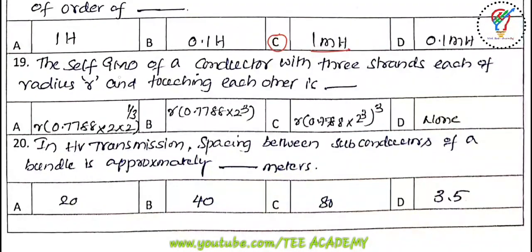Nineteenth question: the self-GMD (also called GMR) of a conductor with three strands each of radius r touching each other — the GMR value is r × 0.778 × 2 × 2, to the power of 1/3. This is the right answer, and these types of questions are especially asked in PSC exams.